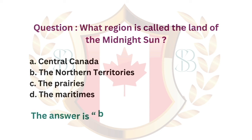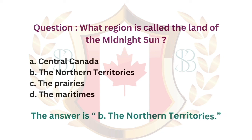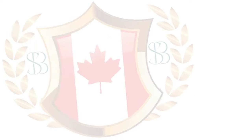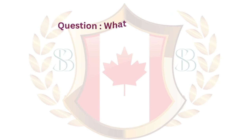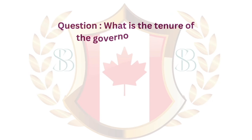Question. What region is called the Land of the Midnight Sun? a. Central Canada. b. The Northern Territories. c. The Prairies. d. The Maritimes. The answer is b. The Northern Territories.